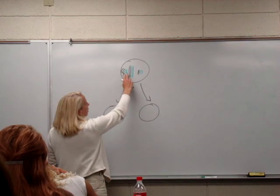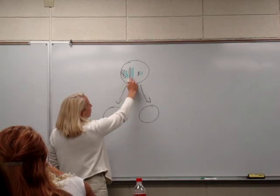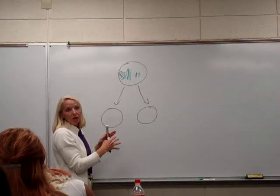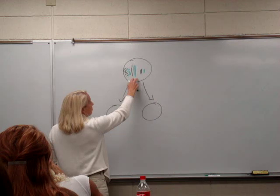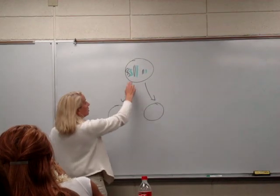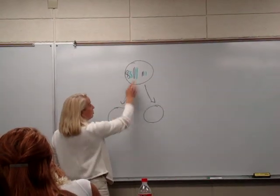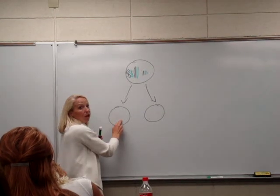Independent assortment says, well, we can divide these up and split them up any way we want. Right. Segregation says, we still have to put two of these, two of these, and two of these over here.